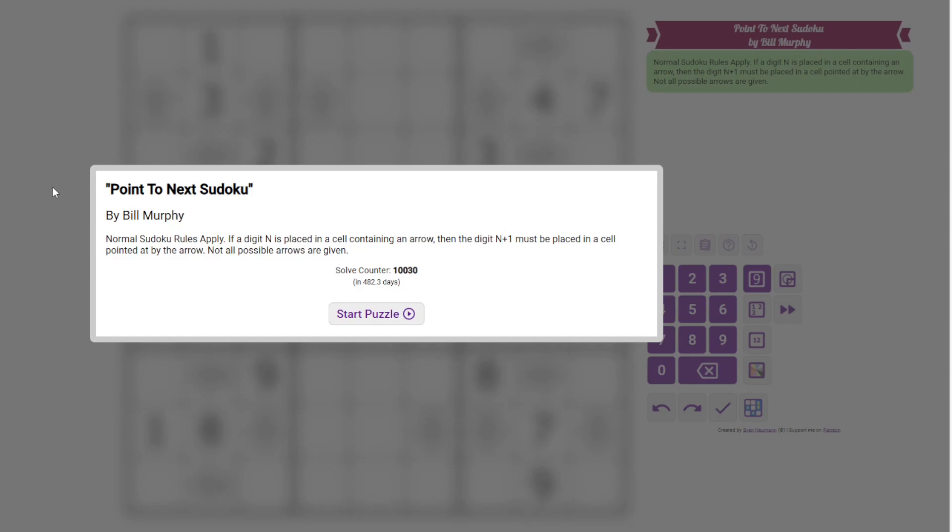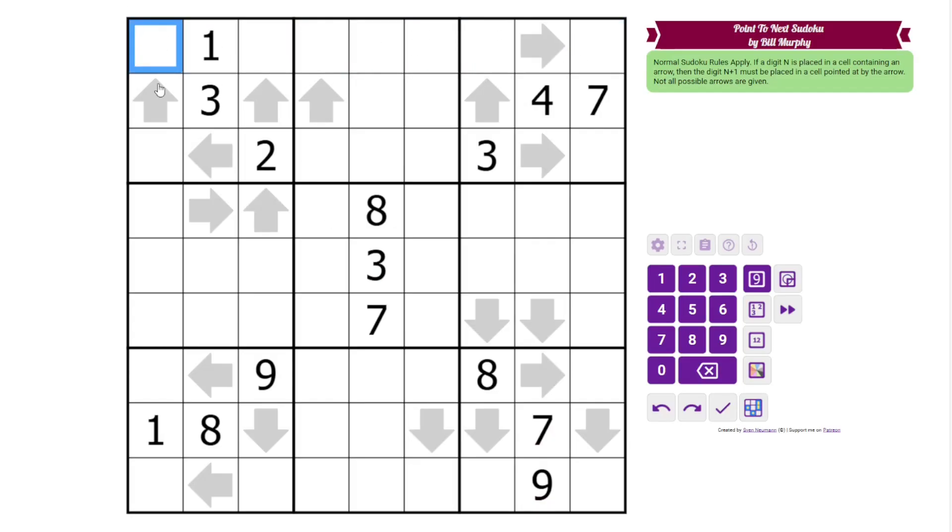It is Point to Next Sudoku by Bill Murphy. And we have normal Sudoku rules apply, 1 to 9 in each row column and 3 by 3 box. Additionally we have some arrows in the grid. And these arrows tell us that the digit immediately following that arrow must be somewhere in the direction of the arrow.